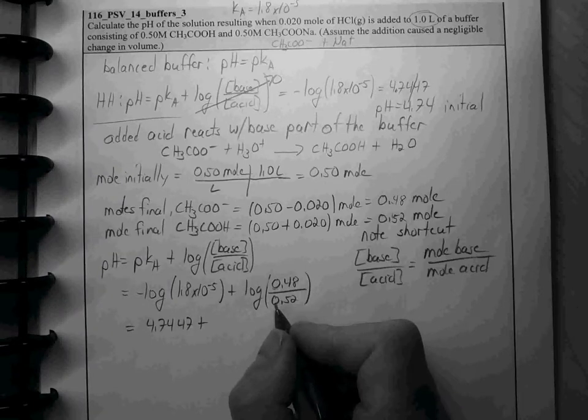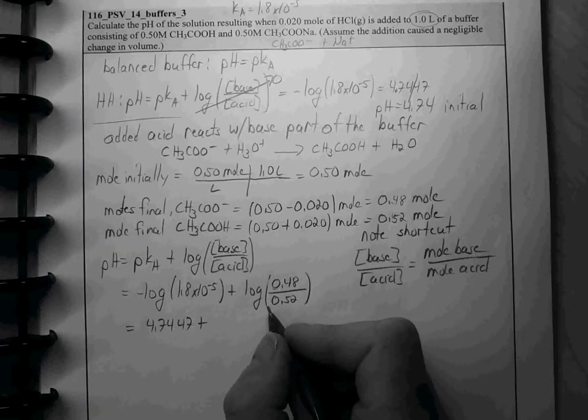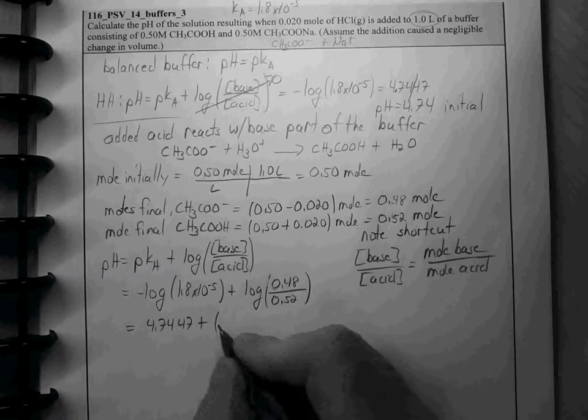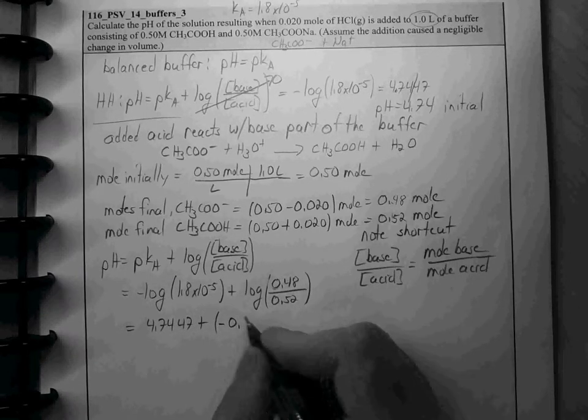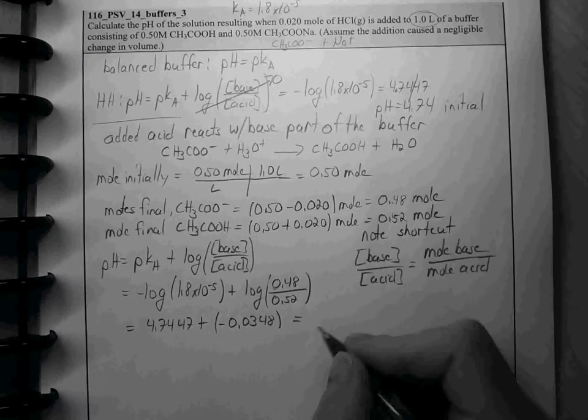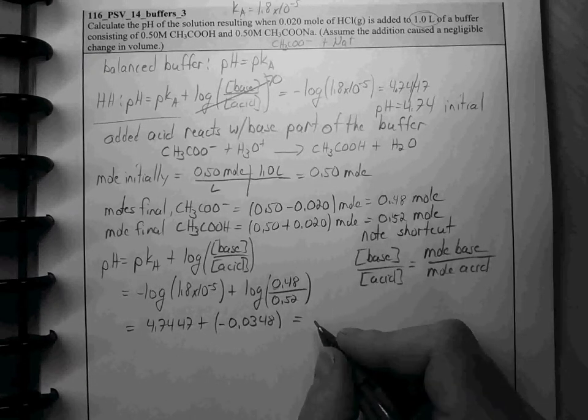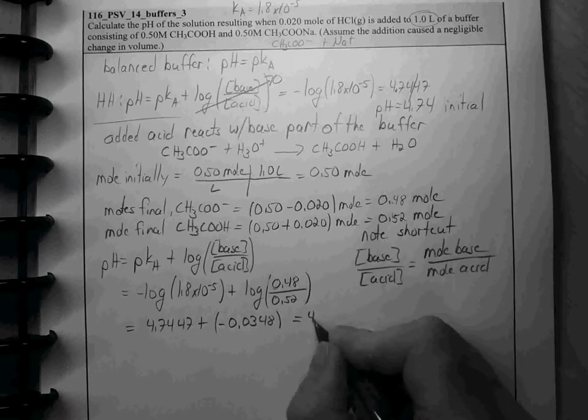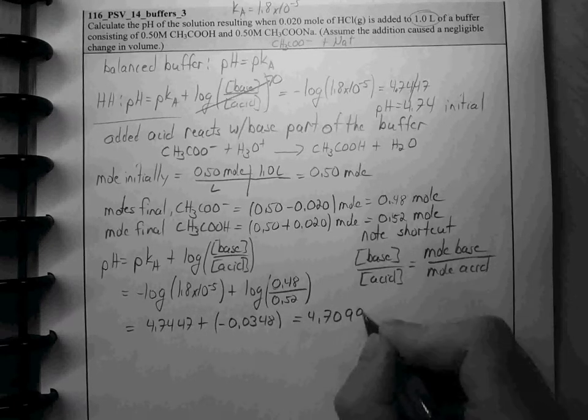If we do this calculation, this comes out to be negative 0.0348, and therefore this is 4.7099.